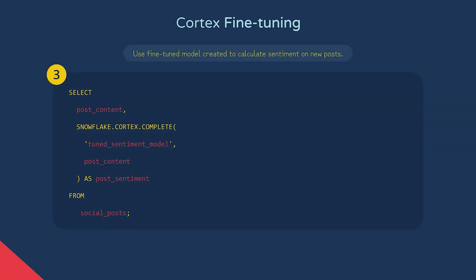Step three would be to use the fine-tuned model instead of the larger model to much more efficiently analyse the millions of posts. To give you a sense of the savings possible: the Claude IV Opus model used initially to calculate sentiment — a huge model — currently costs 12 credits per 1 million tokens. And the fine-tuned smaller model, Mistral 7B, is currently 0.12 credits per 1 million tokens. That's 100 times less.